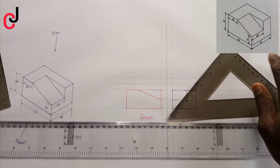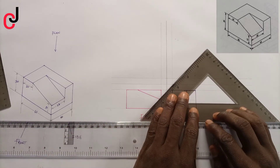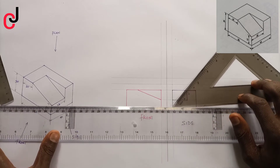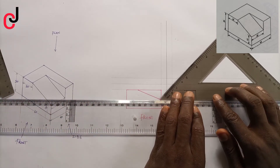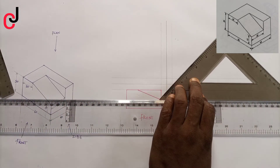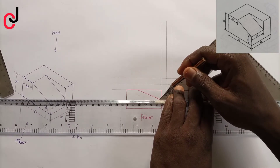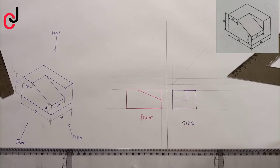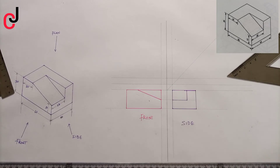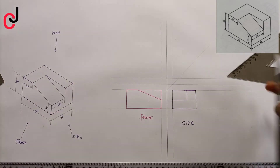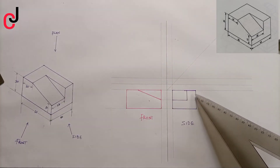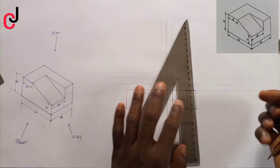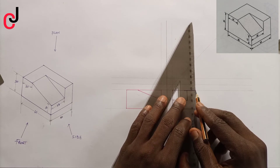First we'll take our 45-degree set square and project a straight line with it. Now we'll project straight lines, starting from our side view and our front view to get our plan. Project the side view up.